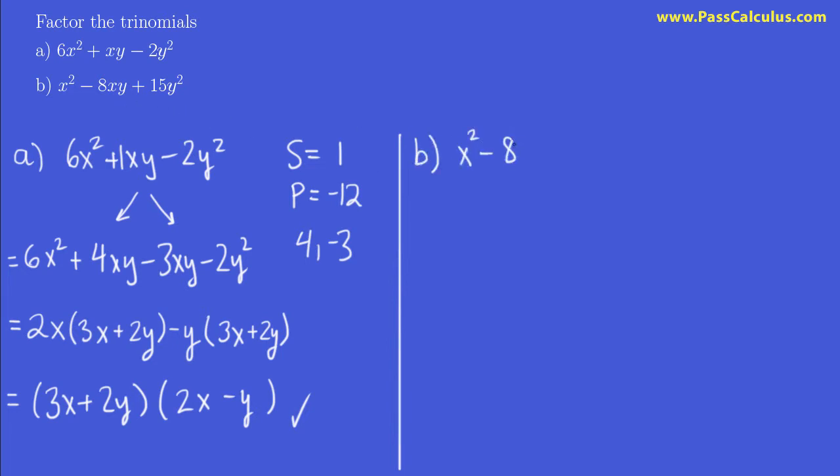So x squared minus 8xy plus 15y squared. So here the sum is what? Should be what? And the product should be what? Well, the sum is the value of b. b is not 8, b is negative 8. And the product is 1, there's a hidden 1 there, times 15, a times c. 1 times 15 is 15.